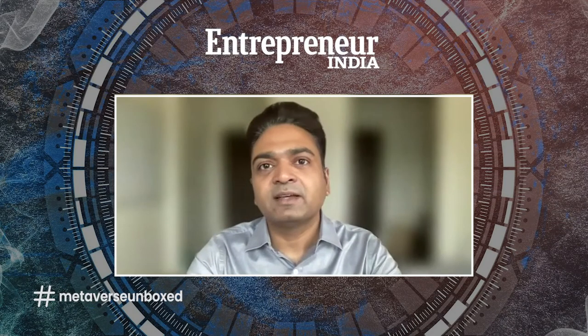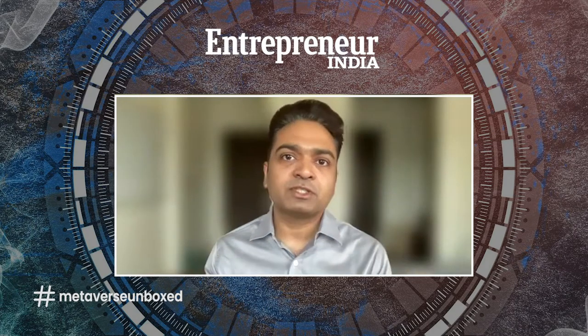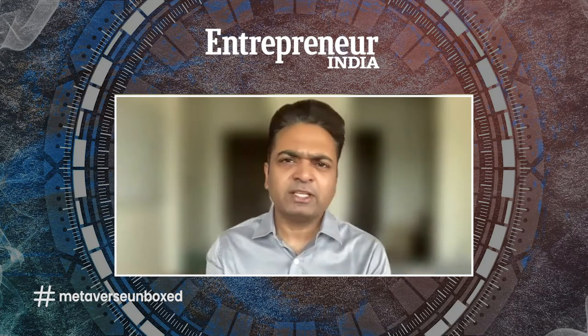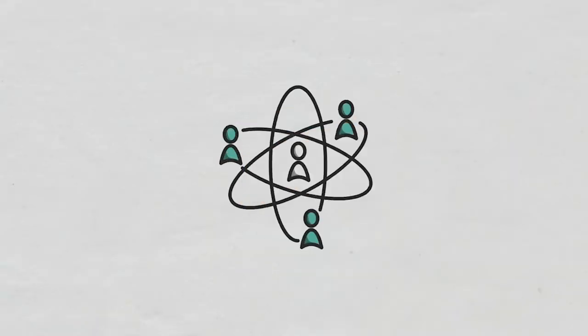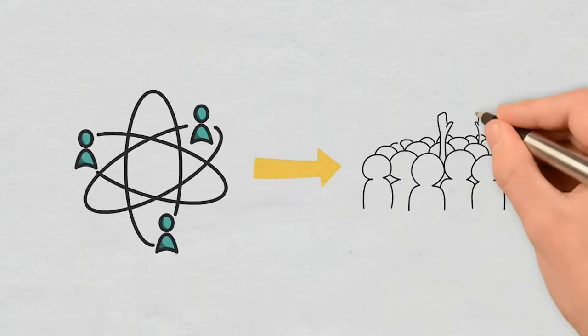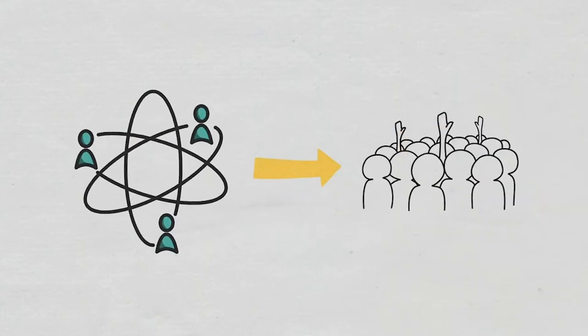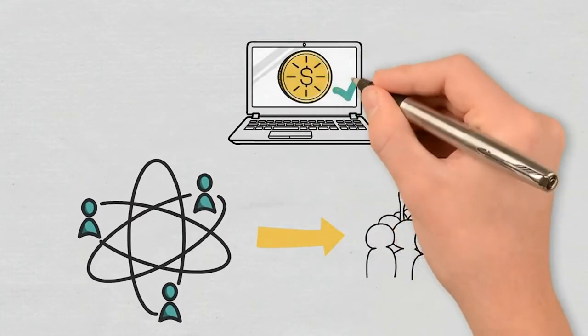DAOs are one of the most fascinating innovations of Web3. There are two elements to it: the decentralized element and the autonomous element. Organization, of course, is something you already know. A DAO is essentially run on a blockchain as an organization where people come together and interact with each other through the rules laid out by the smart contract.